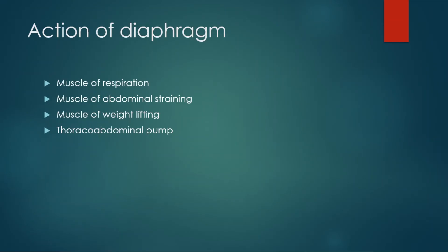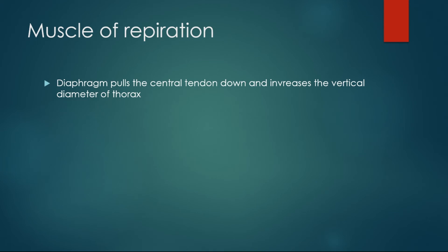Now let's look at the actions of the diaphragm. It is a muscle of respiration, abdominal straining, weight lifting, and acts as a thoracoabdominal pump. When the diaphragm contracts, it pulls the central tendon down along with the pericardiophrenic ligament; the pericardium and the lungs and heart are drawn down, the thoracic cavity expands, area increases, pressure decreases, air is drawn in, and inspiration is accomplished. The diaphragm is therefore the primary muscle of inspiration.